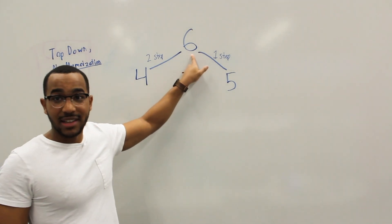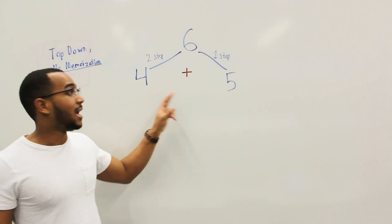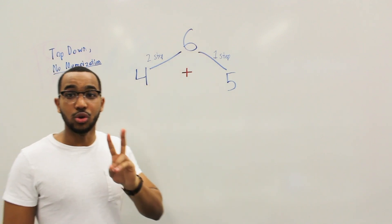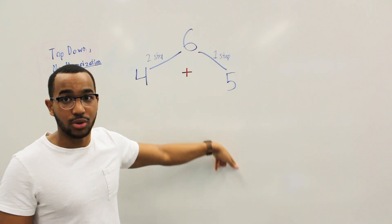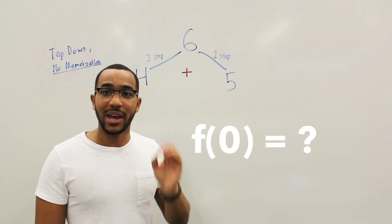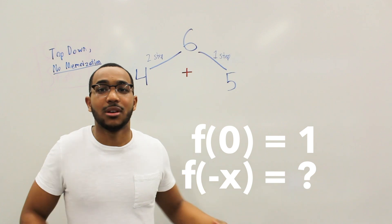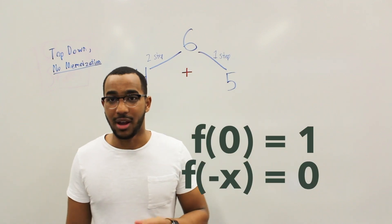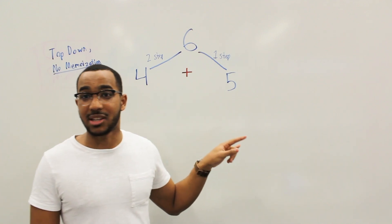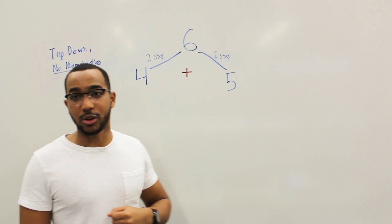The total ways to make six steps is the sum of the total ways to make four steps and the total ways to make five steps. At every point we express the two possibilities and keep reducing. When we reach the base cases, we know the answers: when I have zero steps left, there is one way — we do nothing. If I'm negative, there are zero ways. Those are our base cases, f(0) and f(negative).